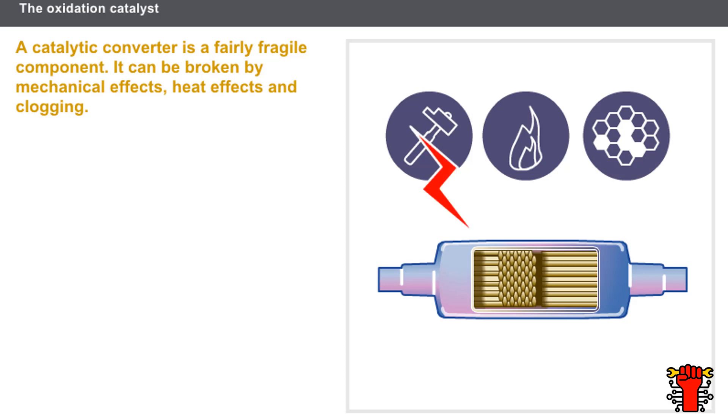Mechanical stresses or heat can rupture the ceramic blocks. The ceramic material may melt as a result of overheating due to too great a quantity of pollutants to handle.